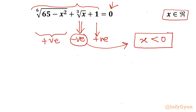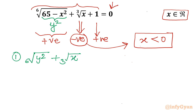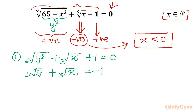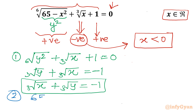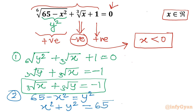Now let us use substitution. Let 65 minus x squared equal to y squared. So the first equation I will write would be: sixth root of y squared, plus cube root of x, plus 1 equals 0. Sixth root of y squared is cube root of y, so cube root x plus cube root y equals negative 1. That is our first equation. The second equation comes from the substitution: 65 minus x squared equals y squared, so x squared plus y squared equals 65. This is our second equation.